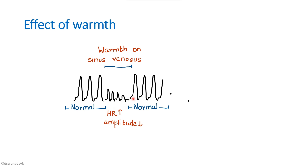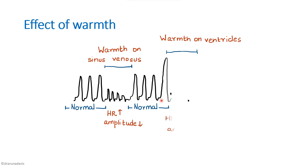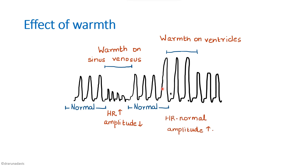After showing normal recordings again, we show the effect of warmth on the ventricles. When warmth is applied on the ventricles, the force of contraction is increased. The heart rate is normal but the force of contraction is increased, depicted by increased amplitude. This means that force of contraction is determined by the ventricles, whereas heart rate is determined by the sinus venosis.